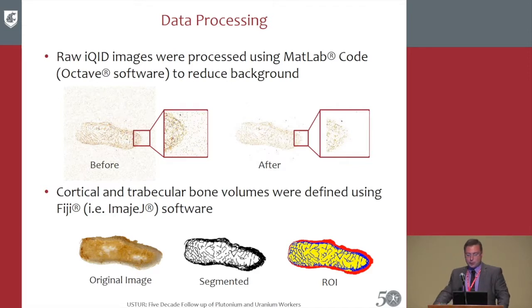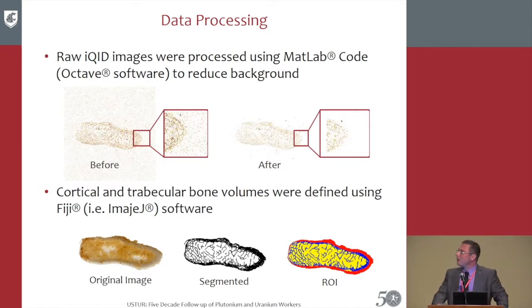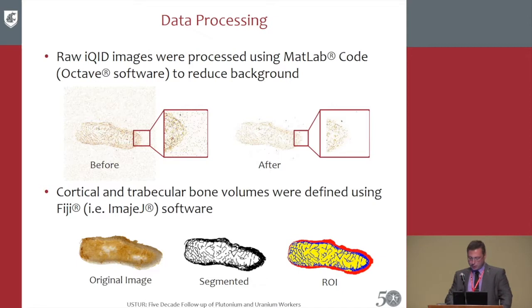For data processing, background was removed after counting completed. On the left-hand side you can see the image before processing. It achieved about a 95% reduction in background with only a few percent reduction in detection efficiency. Images were then processed using the free software ImageJ, which is quite powerful, and segmentation and ROI contouring were all done within that software.